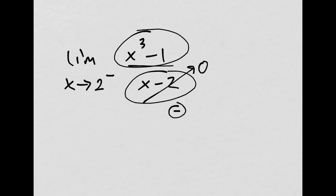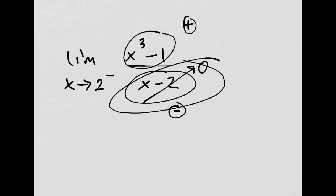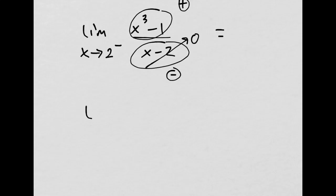And I can use direct substitution here. 2 cubed is 8. 8 minus 1 is positive. So, really, I have something positive in the top, and I'm going to 0 in the bottom. So, if you remember, the limit as x approaches 0 from the left side of 1 over x, if the denominator gets really tiny and the numerator doesn't, then this goes to infinity or negative infinity.